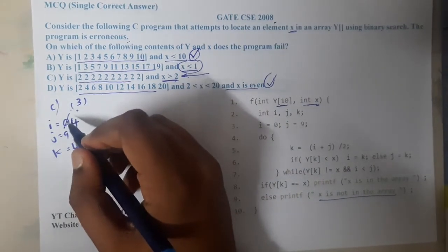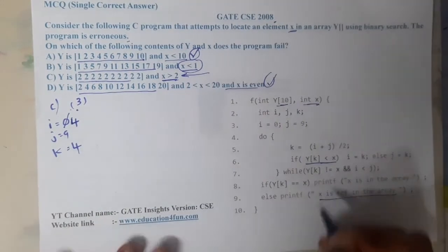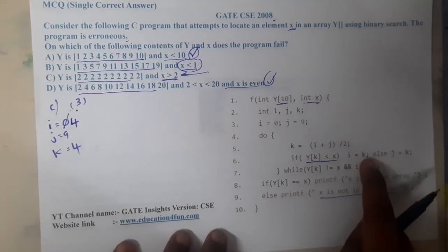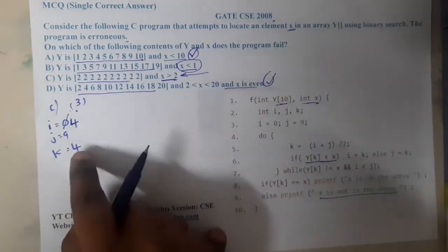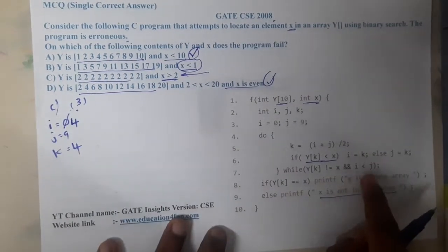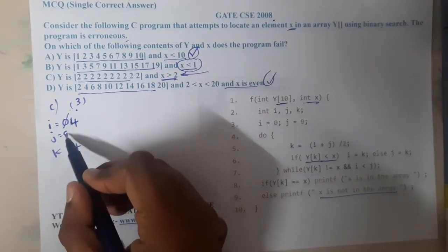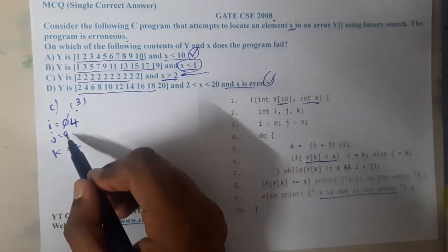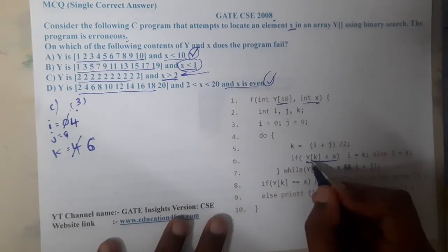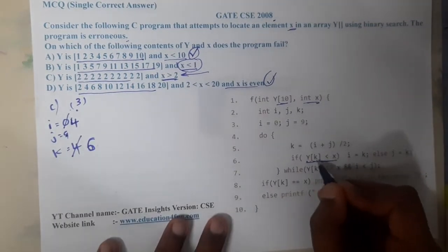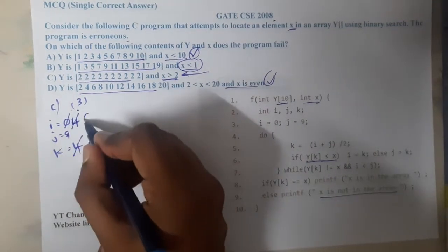At this point we notice: if we are doing binary search, this condition updating i = k seems wrong. Anyway, continuing — we check the while condition: y[k] = y[4] = 2 is not equal to x, and i < j (4 < 9), both true, so we loop again. Now k = (4 + 9) / 2 = 13 / 2 = 6.5, so k = 6. y[6] = 2 is less than 3, so again we set i = k, making i = 6.